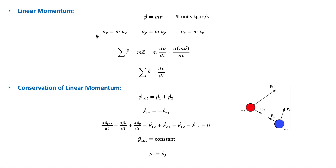In component form, we may write the momentum equation accordingly. We can also express Newton's second law in terms of momentum. For a particle-like object of constant mass, ΣF equals ma, which equals m times dv/dt, and since m is constant, this equals d(mv)/dt, which is dp/dt. This shows that the rate of change of linear momentum of an object equals the resultant force acting on it and is in the same direction as that force.